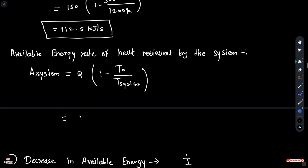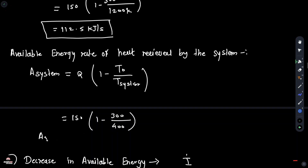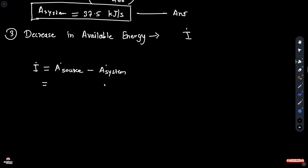The available energy rate of heat received by the system: A_system is equal to 150 multiplied by (1 minus 300 divided by 400), so A_system is equal to 37.5 kJ per second.